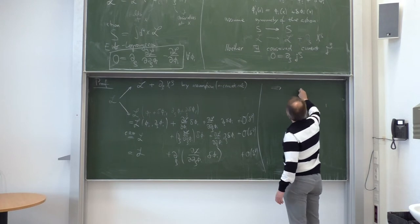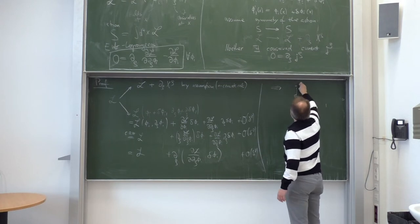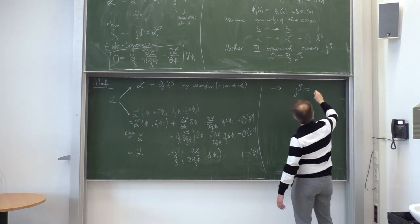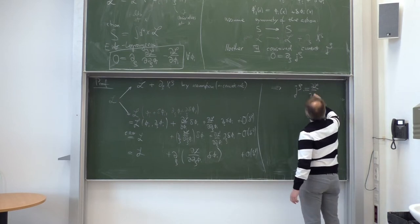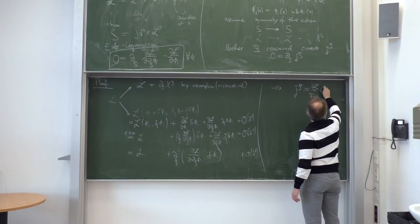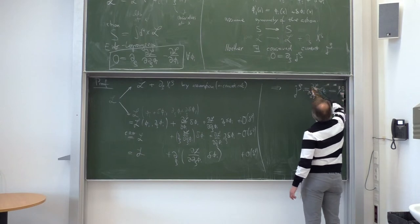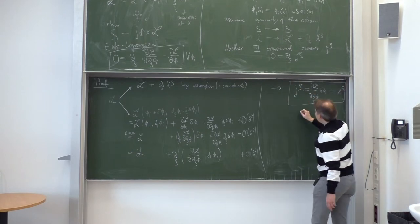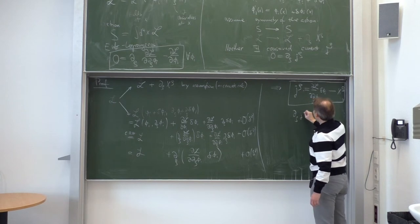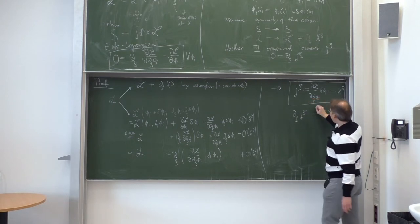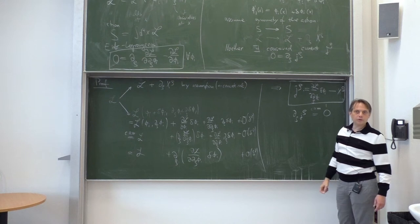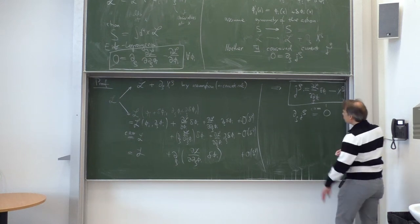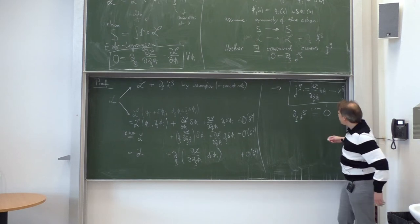We get a conserved current j_rho which we can read off: j_rho = dL/d(d_rho phi_i) times delta phi_i minus X_rho. This current automatically satisfies d_rho j_rho = 0, where this equation holds when the equations of motion are met. We can also define a conserved charge Q as the three-dimensional integral over the zero component, analogous to electrodynamics, giving dQ/dt = 0.